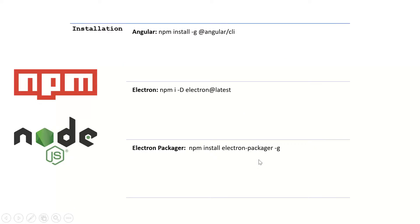First of all, you will need three npm packages. The third one is optional — it's for making an executable of your app. We will be creating an Angular app and then doing some modifications so that it becomes our ElectronJS app.